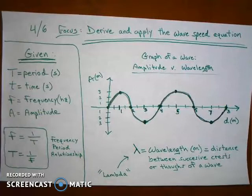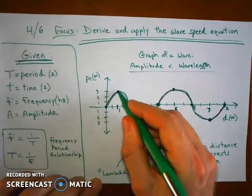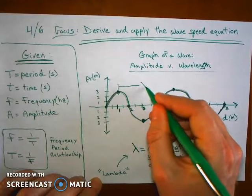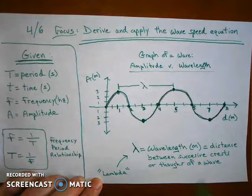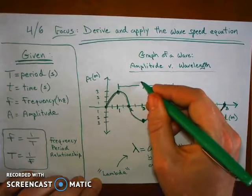But if you measure the distance from one wave crest to the next successive wave crest, we're going to denote that distance with the Greek character. This is pronounced lambda, L-A-M-B-D-A, lambda. And the distance between successive crests of a wave or successive troughs of a wave is called wavelength, lambda.